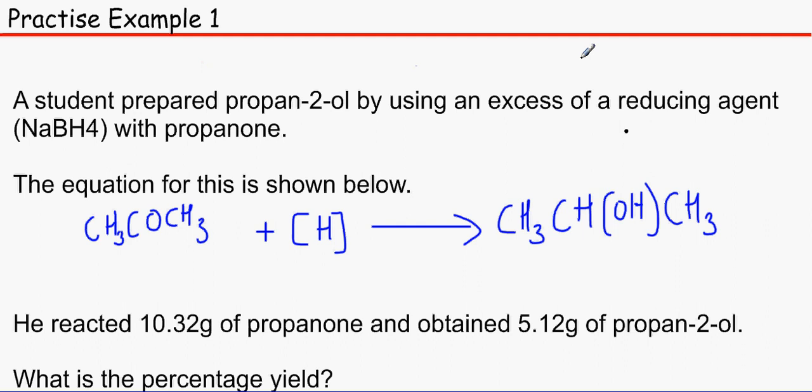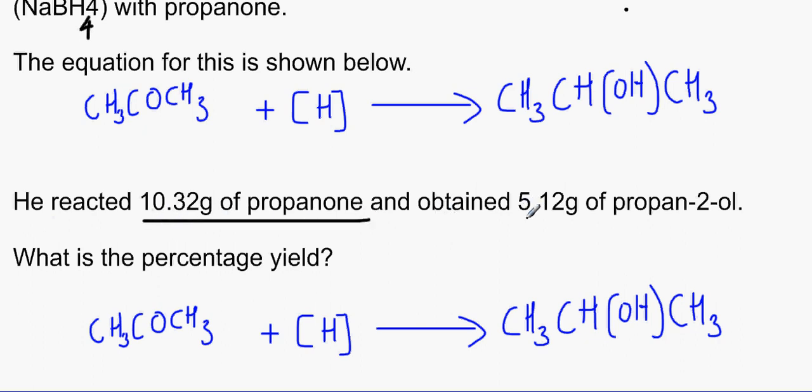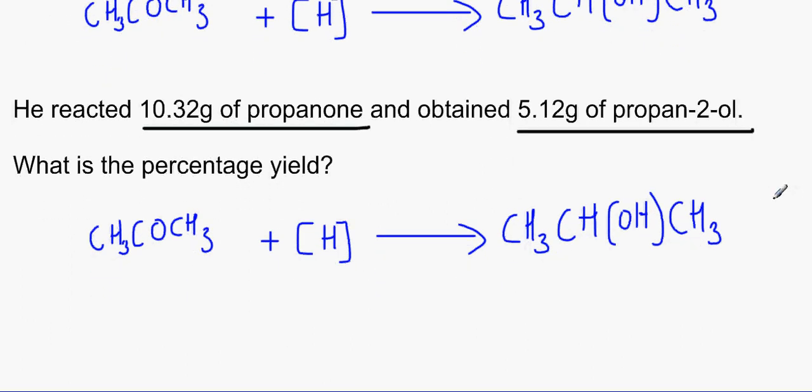A student prepared propan-2-ol by using an excess of a reducing agent, sodium borohydride with propanone. The equation for this is shown below. You've got the propanone plus the reducing agent to make propan-2-ol. He reacted 10.32 grams of propanone and obtained only 5.12 grams of propan-2-ol. This means that we do not have a 100% percentage yield.